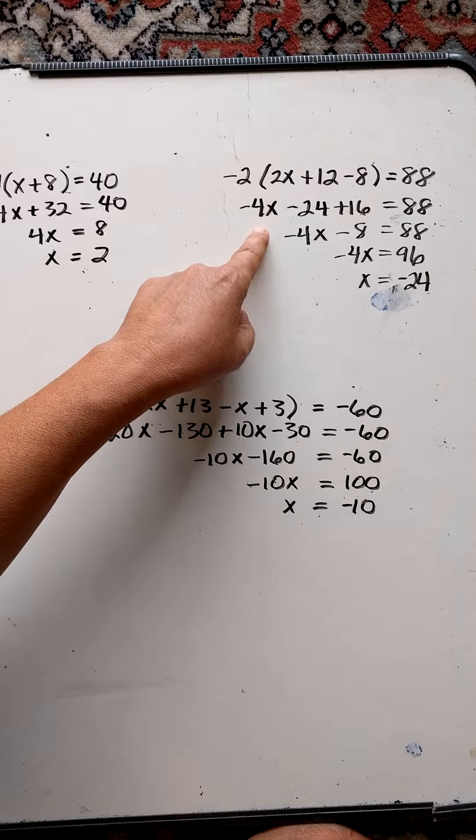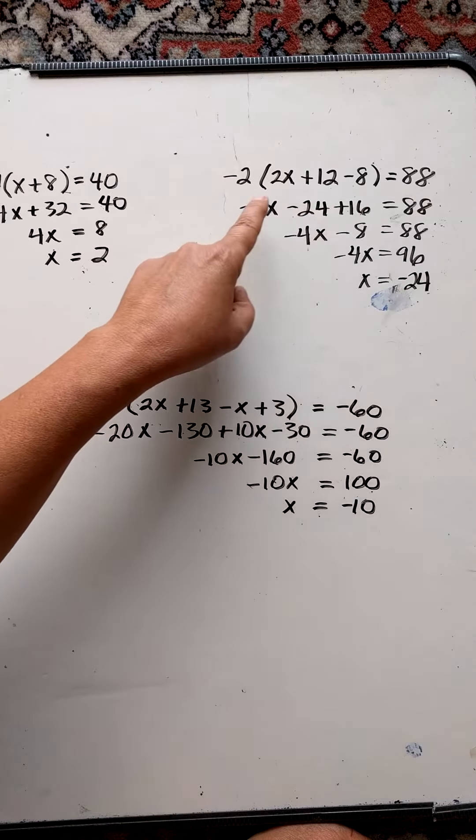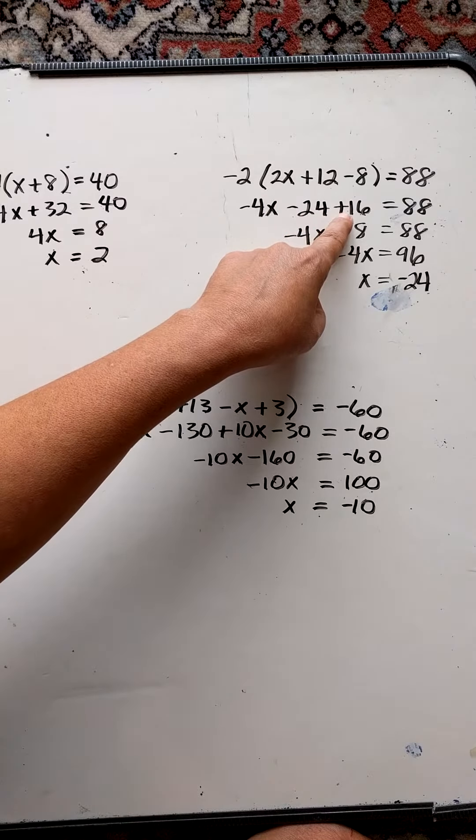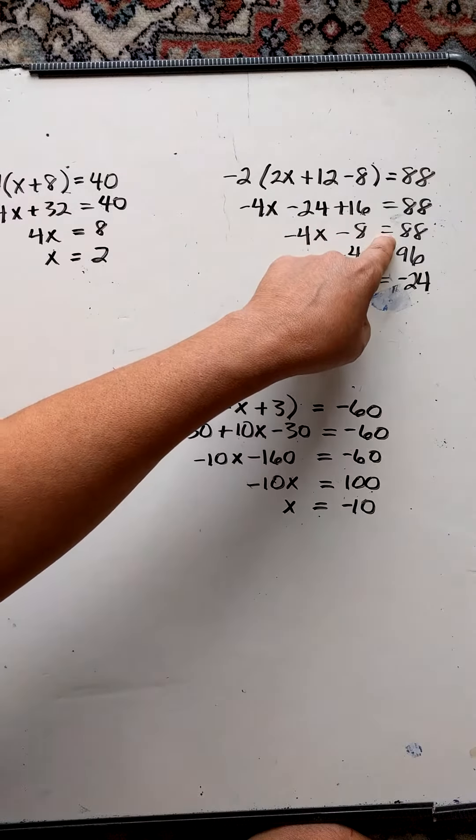Here I'm combining like terms. These two are like terms, so I'll just keep the negative 4x here. Negative 24 plus 16 is going to be negative 8. That equals 88.